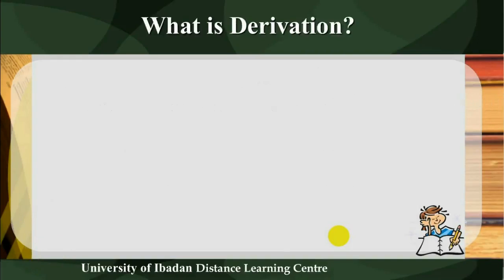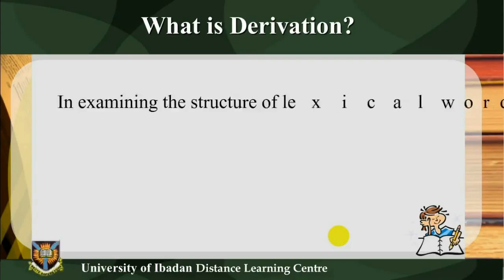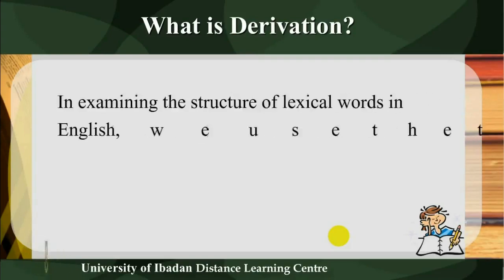Pre-test: How many morphemes can you identify in each of the following words? Remember: comprehensibility, encouragement, deforestation, post-structuralism, decolonization, and irredentism.